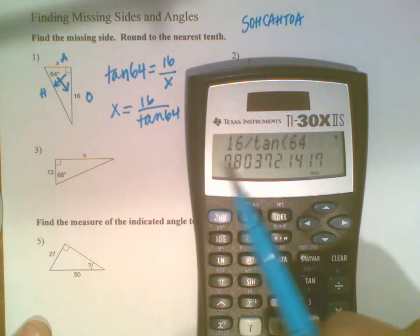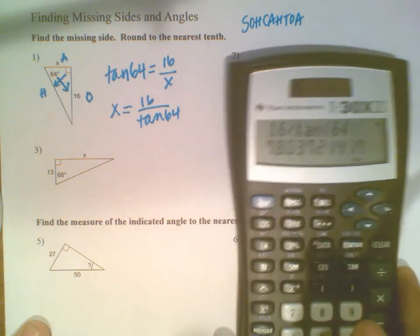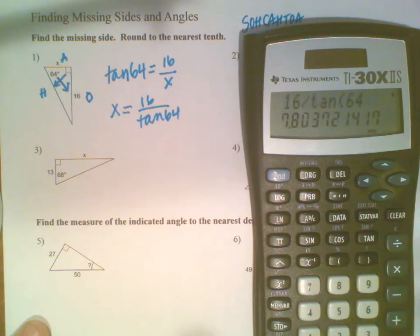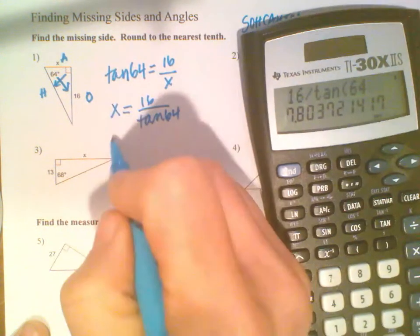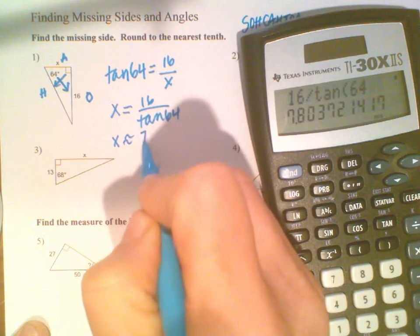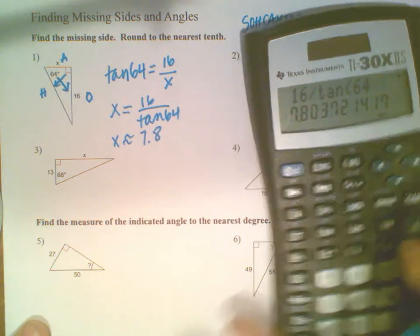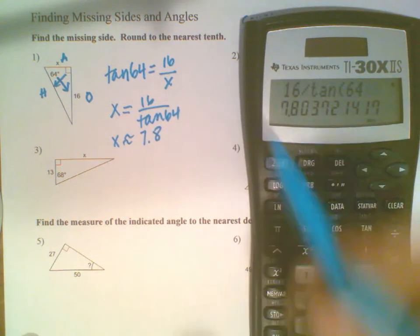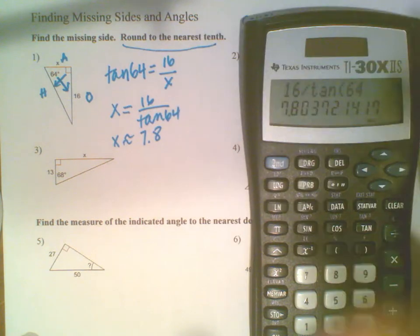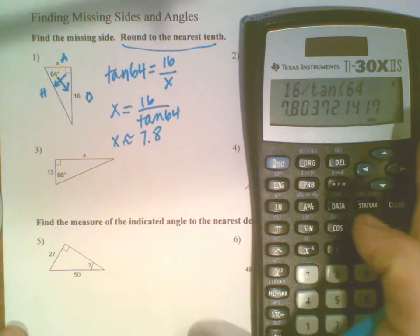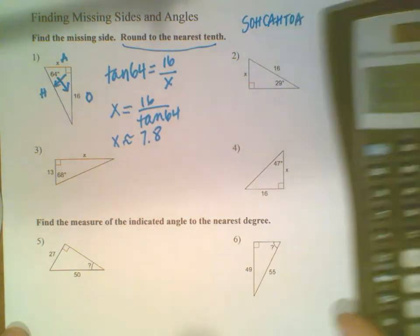I can approximate this. If you get multiple choice, just look for the one that's closest. I'll call that about 7.8. These directions say round to the nearest tenth, so that's probably what your assignment will say as well.